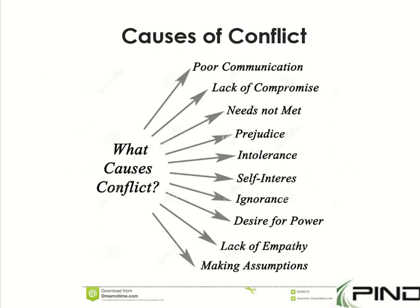What are the things that cause conflict? Things like poor communication — when two people do not communicate well, there's bound to be conflict. When there's lack of compromise, maybe two groups are having a misunderstanding and one person does not want to compromise, there's bound to be conflict. When needs are not met between two people or two groups, there's bound to be conflict — and when neither side decides to compromise, that also leads to conflict.